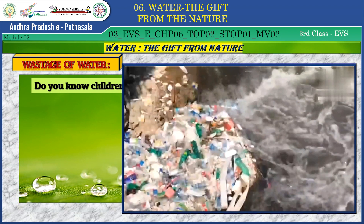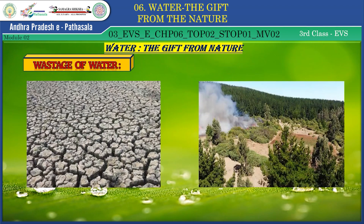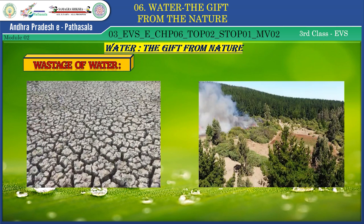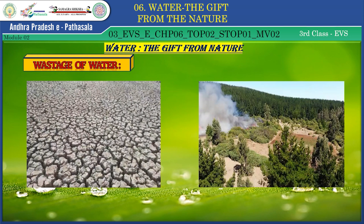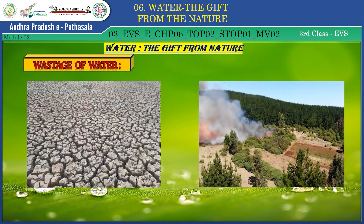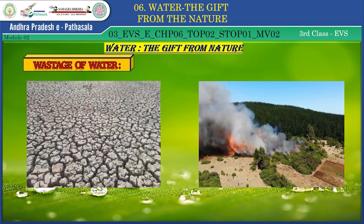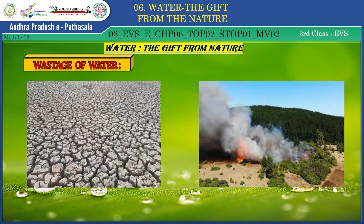Fourth, pollution: when water is wasted, it can carry trash, chemicals and pollutants from the streets into rivers, lakes and oceans, harming aquatic life and making water unsafe to use. Fifth, droughts and disasters: in some places, if water is wasted a lot, it can lead to droughts, making it difficult for people, plants and animals to survive. It can also lead to problems like wildfires.